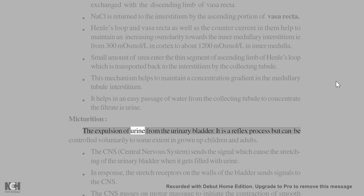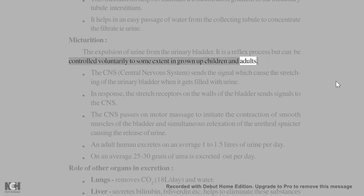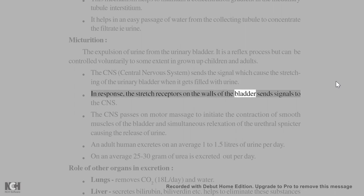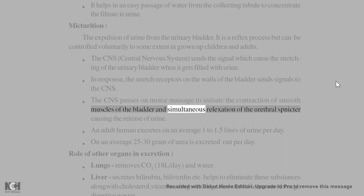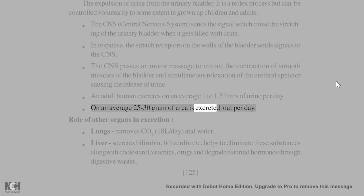Micturition: the expulsion of urine from the urinary bladder. It is a reflex process but can be controlled voluntarily to some extent in grown-up children and adults. The CNS sends signals causing stretching of the urinary bladder when filled with urine; stretch receptors on the bladder walls send signals back to the CNS, which initiates contraction of smooth muscles and relaxation of the urethral sphincter, causing release of urine. An adult human excretes on average 1 to 1.5 liters of urine per day and about 25–30 grams of urea per day.